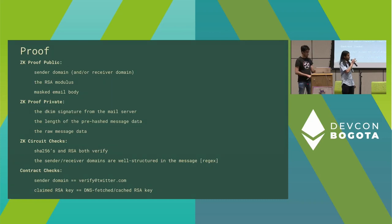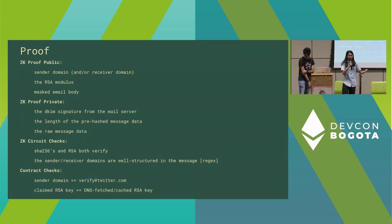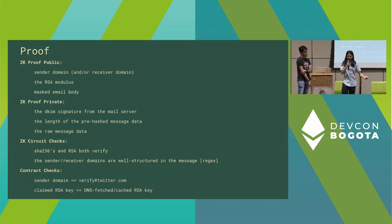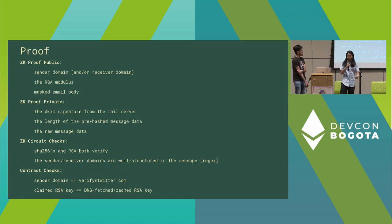The things we want to keep private are all information not related to what the user wants to release — specifically the entire DKIM signature, which would de-anonymize them because a mail server would know who they are; the length of the pre-hashed message data and general lengths we pass around to ensure efficient computation; and all of the raw message data, raw sender data, and the identities of everyone involved.